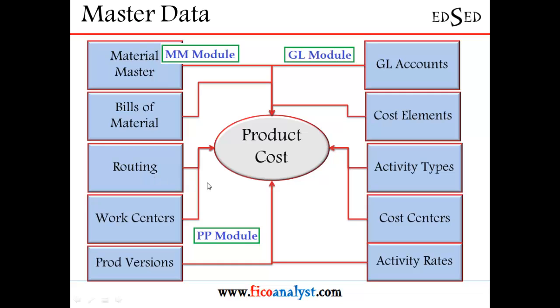So all these — cost elements, activity types, cost centers, and activity rates — are part of your CO module. If you carefully observe, product costing as such has no master data of its own. All the master data for the product costing module comes from other modules like the MM module, PP module, GL module, and CO module.